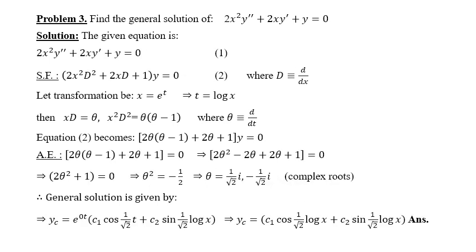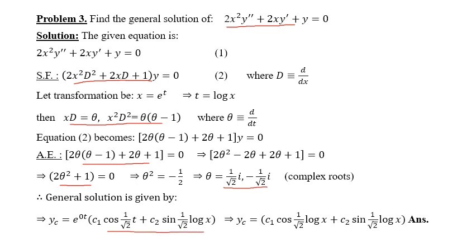There is another homogeneous equation which I leave for you to solve. Write its symbolic form, change it to θ using the substitution, form the auxiliary equation, get the roots — which are complex conjugates in this case — and write down the solution accordingly.